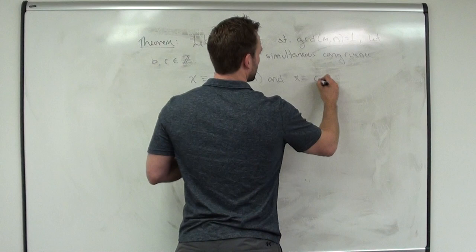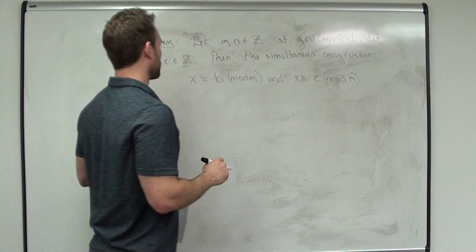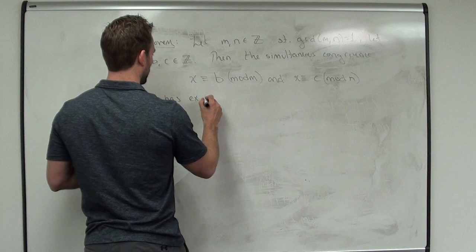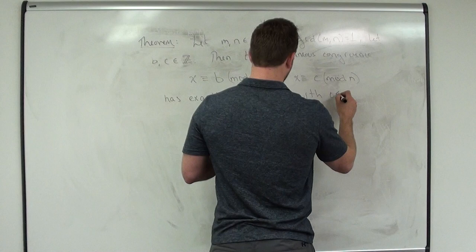Just like we have a two-by-two system of equations there — that's an N — x congruent to B mod M, x congruent to C mod N, has exactly one solution. And we have bounds on that solution too. It has exactly one solution, with that solution being less than M times N.